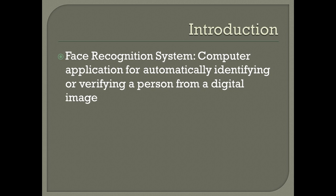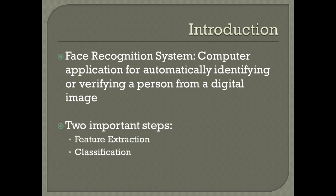A facial recognition system is a computer application which automatically detects a person from a given image based on a database. It has two important steps: the feature extraction step and the classification step. The feature extraction step is also known as the dimensionality reduction step. Instead of comparing the entire image, we extract the most dominant features — known as the principal components — and use them for comparison when testing a new or unknown image. In the classification step, given an unknown image, it is classified as one among the images present in the database and used for identification.